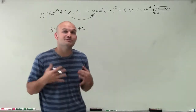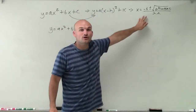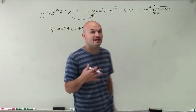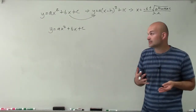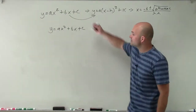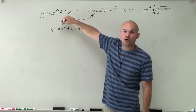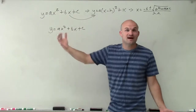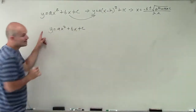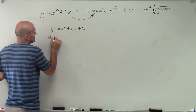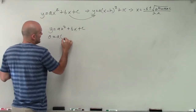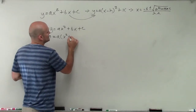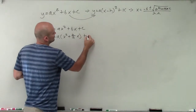By completing the square and then solving for x, we are going to obtain the quadratic formula. The first thing we do with completing the square is make sure we don't have an a in front — our a has to be at least 1. Since we don't know what our a is, we're going to factor it out. Also, we're solving for x, so we set y equal to 0. When we factor out an a, b becomes b over a times x, plus c.